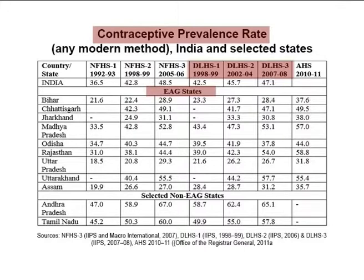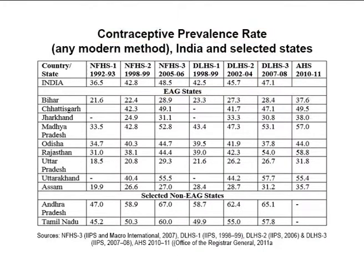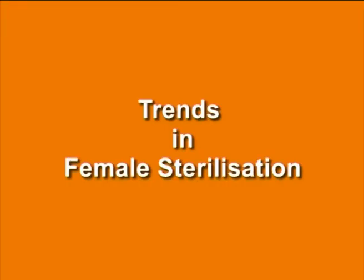Data from DLHS on contraceptive use also showed similar results, with an increase in CPR from 42.5% in 1998–99 (DLHS-1) to 45.7% in 2002–2004 (DLHS-2) to 47.1% in 2007–2008 (DLHS-3) — an average annual increase of about 0.5% over a period of 9 years. Analysis of data from DLHS-2 and 3 and AHS for all EAG states shows that Bihar, Chhattisgarh, Madhya Pradesh, Rajasthan and UP showed an upward trend in the CPR.